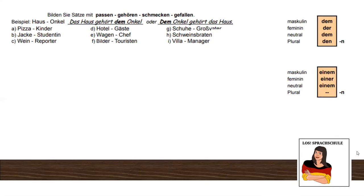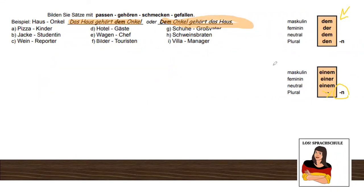Last time we talked about the indefinite and definite article using the dative. We have it here on the right side for you today so you can see and repeat: dem, der, dem, den for the definite article; einem, einer, einem and nothing but the n for the indefinite article. Reading the example on the left: das Haus gehört dem Onkel, or: dem Onkel gehört das Haus.